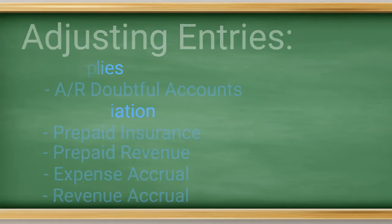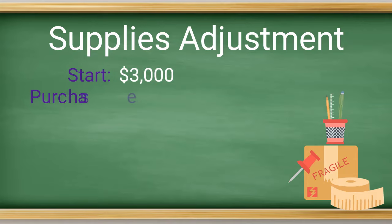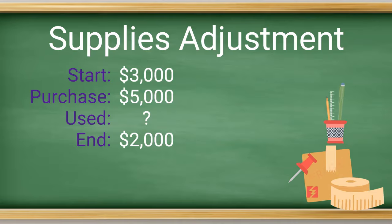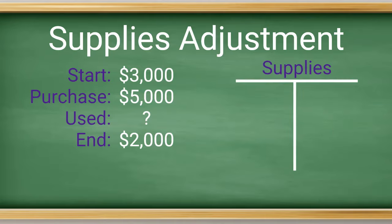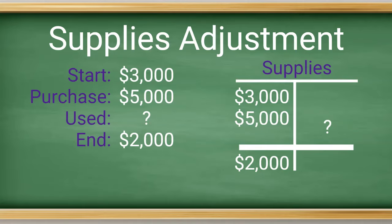Let's jump into our first example of supplies. Let's suppose you are given the following information: at the beginning of the month, you had $3,000 in supplies; during the month, you bought $5,000 in new supplies; and at month end, accounts showed that you had $2,000 in supplies remaining. To determine our expense and then the adjusting entry, we need to figure out how many supplies were actually used. So let's use the T-account and set up the $3,000 on the left side. We have an addition of $5,000 from the purchase — that's a debit — and we know our ending balance of $2,000. So now we just need to solve for the current period's expense. The plug is $6,000 of expense.